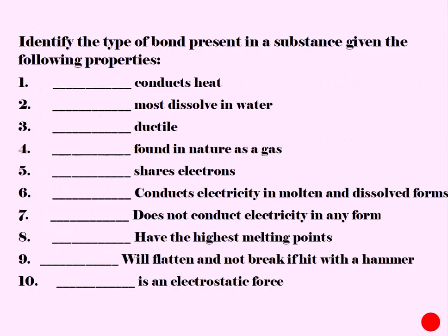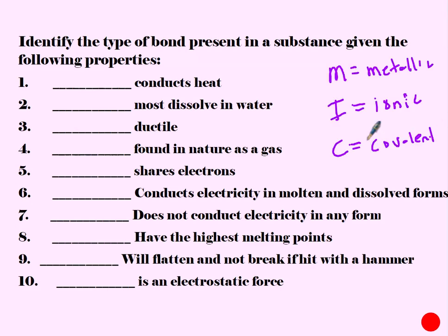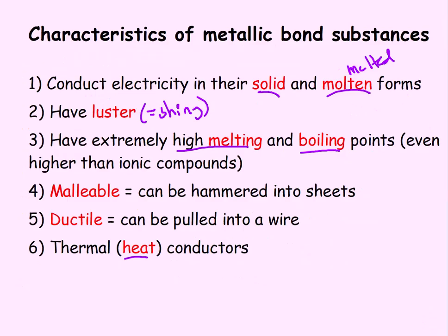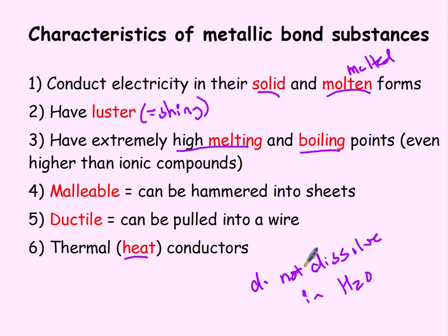Look at the different properties and figure out which type of bond — ionic, covalent, or metallic — has each property. Conducts heat should be metallic. Most dissolve in water was ionic. Under metallic, they do not dissolve in water. So: ionic — most will dissolve; covalent — some dissolve; metallic — do not dissolve. Ductile should be metallic — we can pull metals into wires.